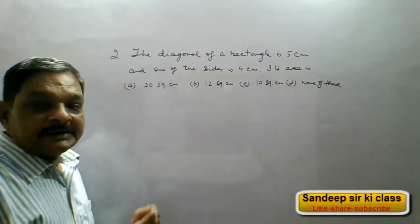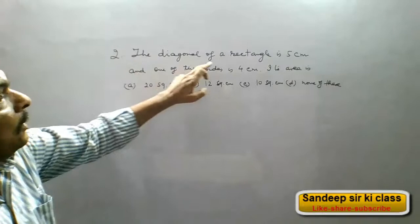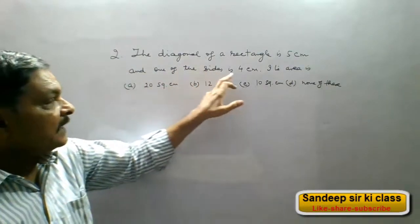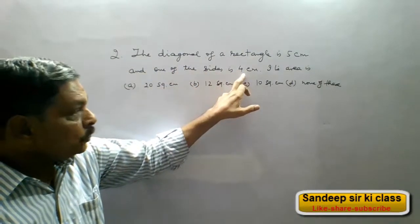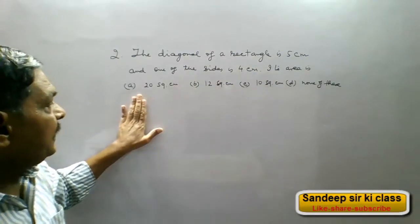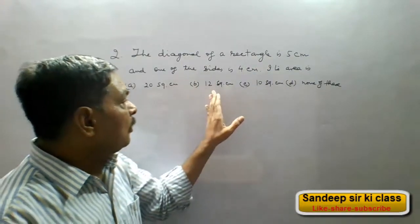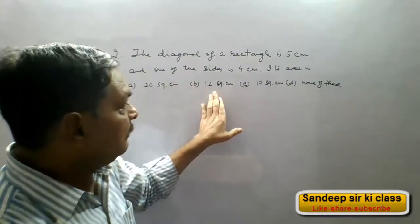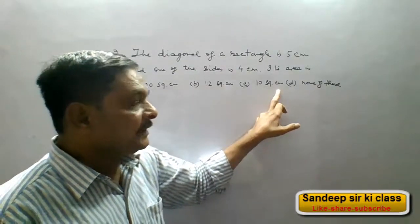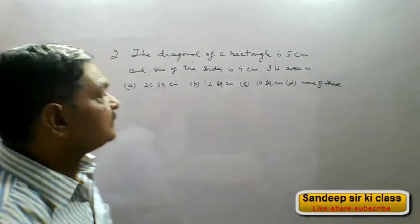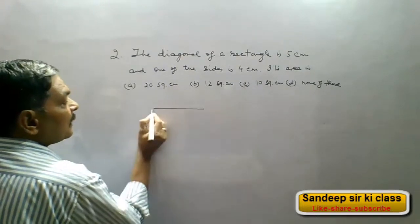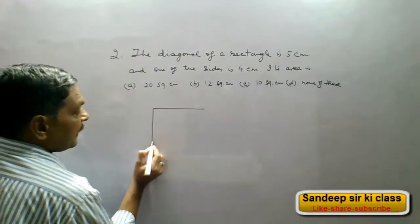The next question: the diagonal of a rectangle is 5 centimeters and one of the sides is 4 centimeters. Its area is — option A: 20 square centimeters, option B: 12 square centimeters, option C: 10 square centimeters, option D: none of these. Let us make a rectangle.